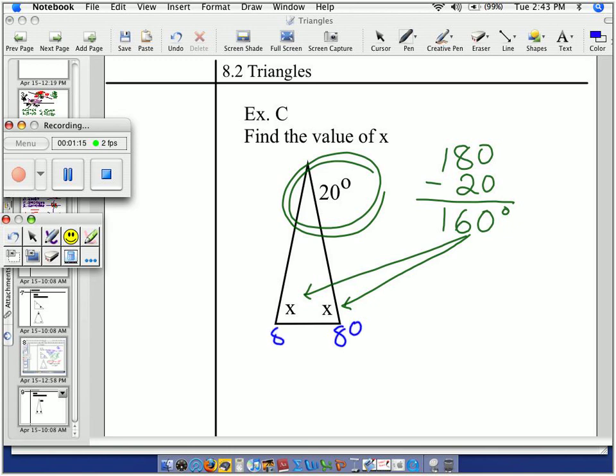If each angle is 80, then both of them are the same. And if I add up 80 plus 80 plus 20, it equals what? How many degrees should there be in a triangle? 180. This is 100 plus 80, 180.